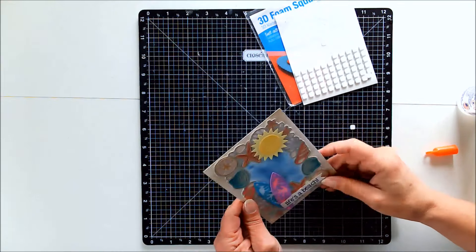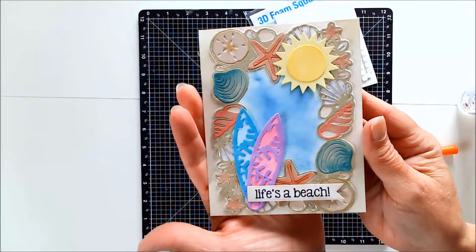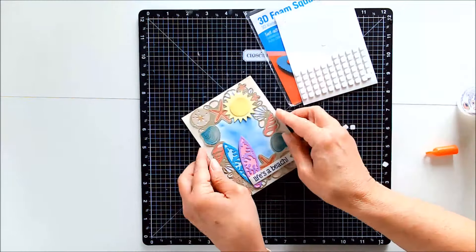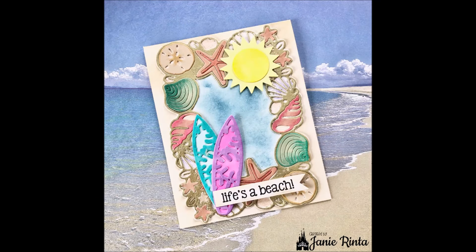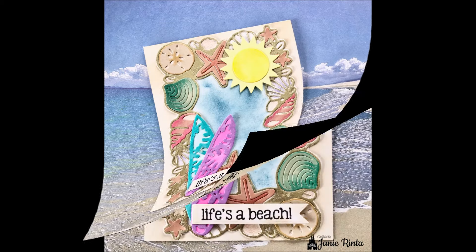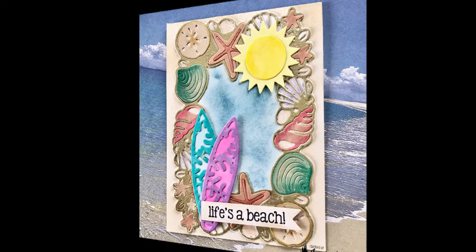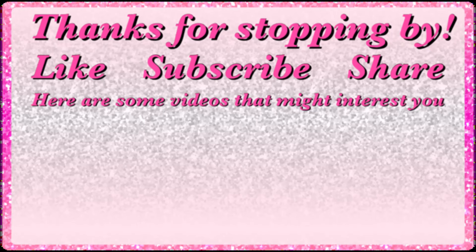And here's my finished card, and I really love how it turned out, and I think that there are so many possibilities with that seashells and starfish frame cutting die from InLoveArts. And I'll have links below in the description box to that cutting die, as well as the beach umbrella and surfboard cutting die set that I used part of today, and a 25% off discount code to InLoveArts should you decide to shop there.